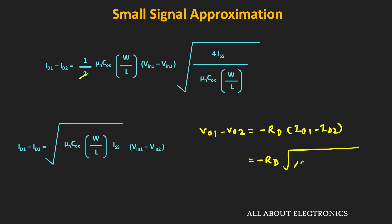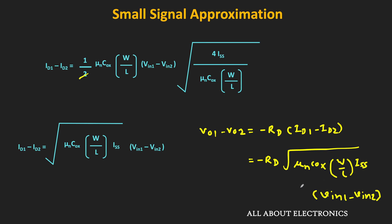So the differential output vo1 minus vo2 equals minus Rd times the square root of mu_n times Cox times W/L times Iss times (vin1 minus vin2). For a given differential pair, mu_n times Cox times W/L is fixed, meaning for a given bias current Iss this entire square root term remains fixed. Therefore, under this small signal approximation, the relationship between the differential output and differential input is now linear. Whenever the differential input is very small we can use this small signal analysis to find the gain of this differential amplifier.